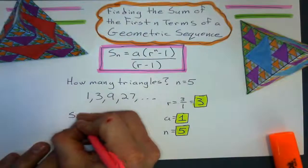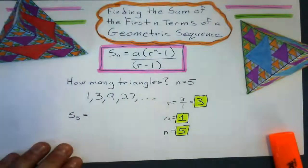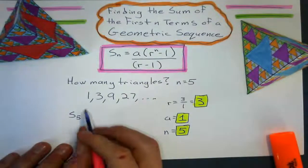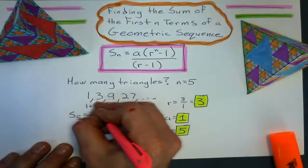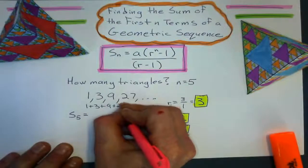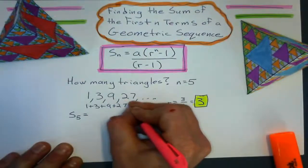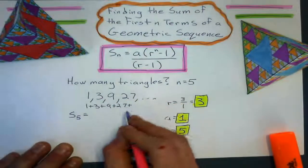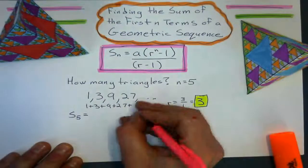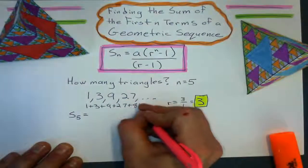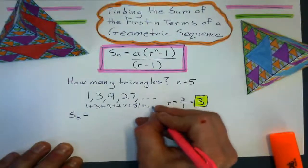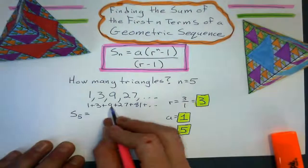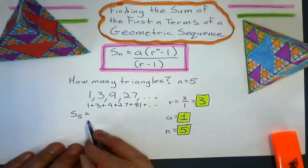The sum of the first 5 terms is going to be 1 plus 3 plus 9 plus 27 plus 81 — that's all I want to know for now. Five terms total.